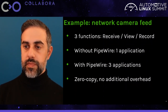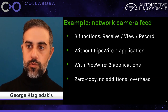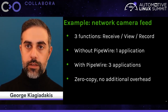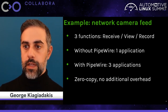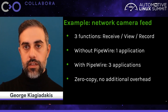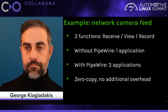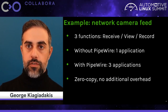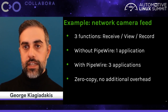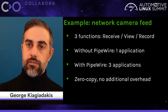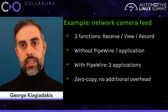Let's see a simple example. We have a system that needs to receive a camera feed from the network using a network camera, then display it and also record its contents. These are three distinct functions. Without PipeWire, this needs to be one application that handles all three. With PipeWire we can split this into three different applications — one that receives, one that displays, and one that records — with no additional overhead since transferring media through PipeWire is zero copy.